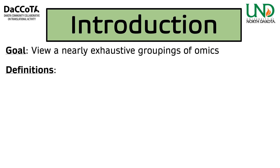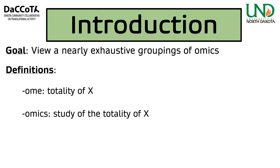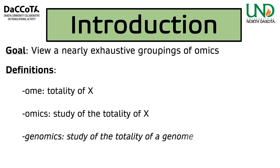A little definition before we jump too far. The word 'ome' really means the totality of whatever x precedes it — totality of x. Whereas 'omics' is the study of the totality of whatever x is. The main example where this initially comes from is genomics — the study of the totality of the genome. So transcriptomics, proteomics, whatever-omics.